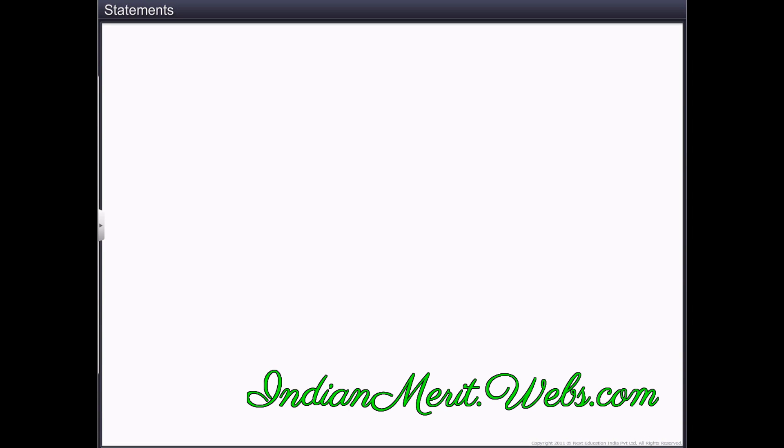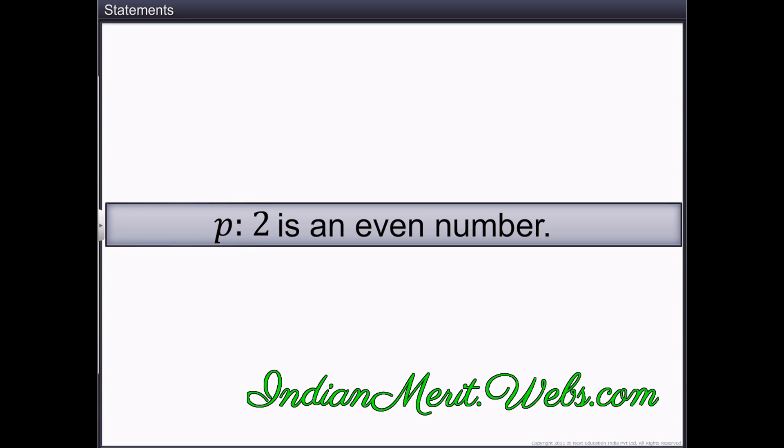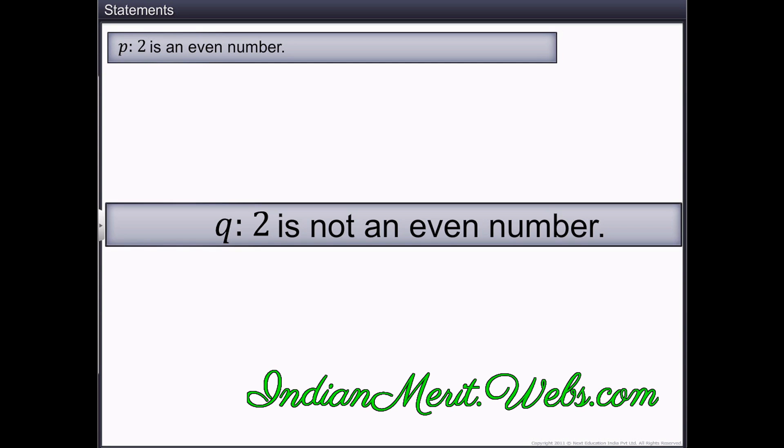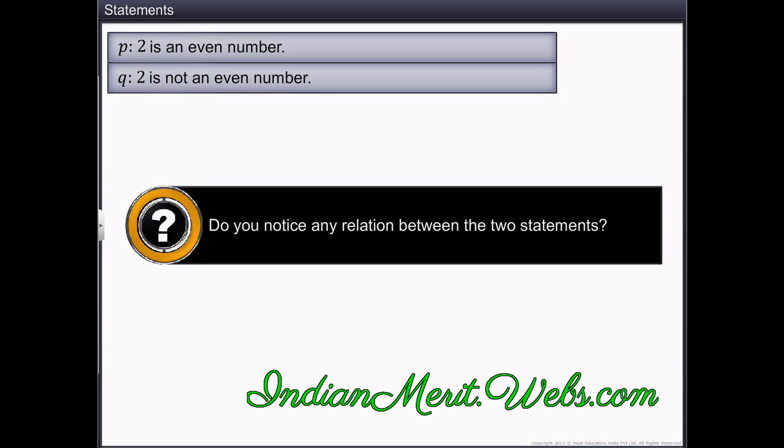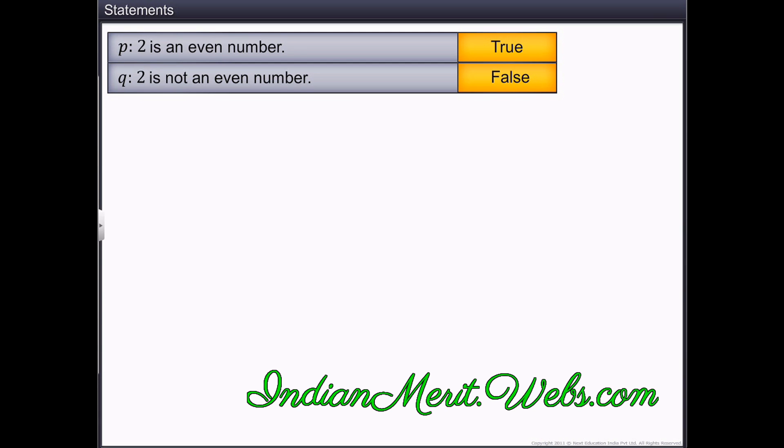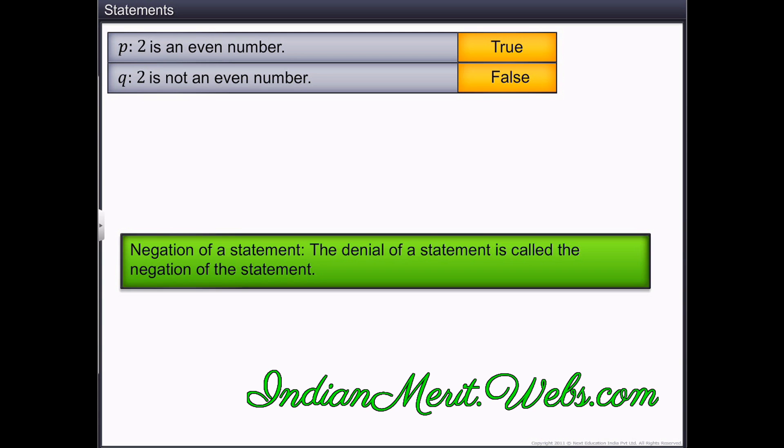Let's consider the statements given. Statement P is 2 is an even number. Statement Q is 2 is not an even number. Do you notice any relation between the two statements? Statement P is true while statement Q is denying statement P. This implies that statement Q is false. Such a statement is called the negation of a statement. The denial of a statement is called the negation of the statement.